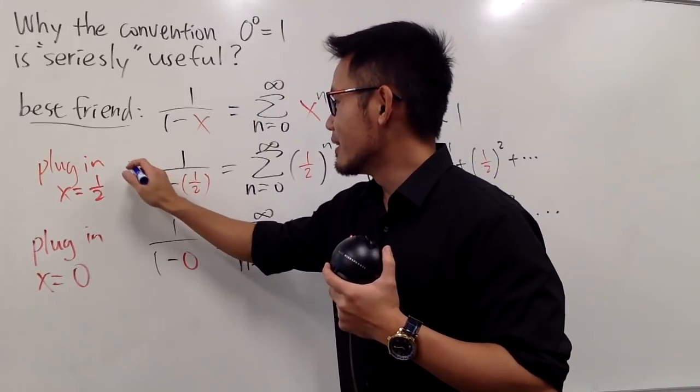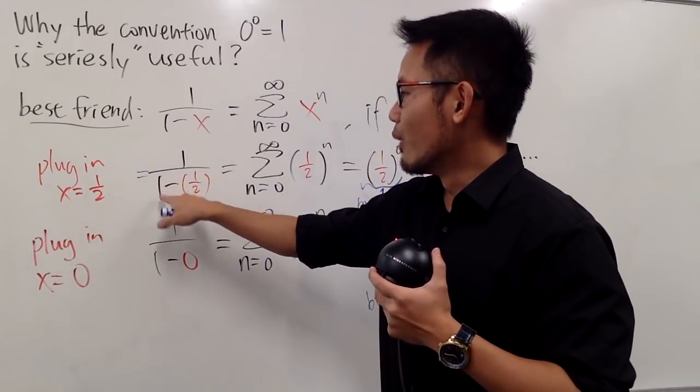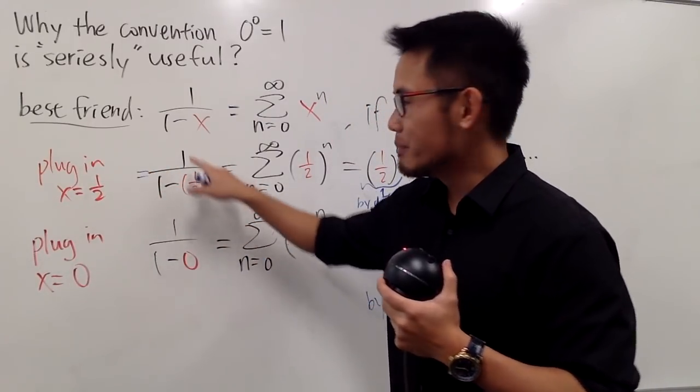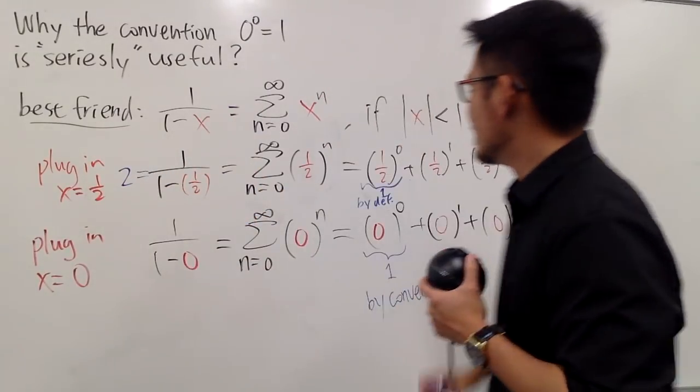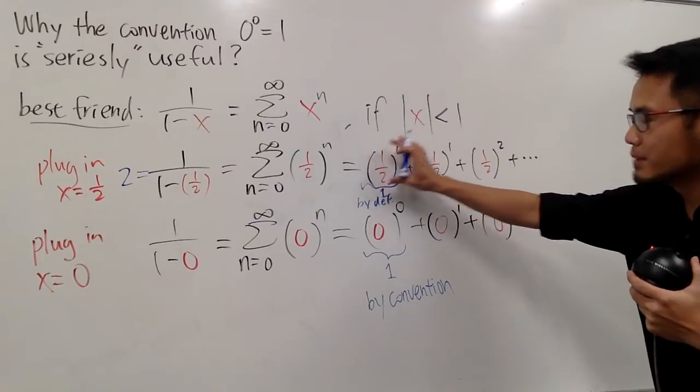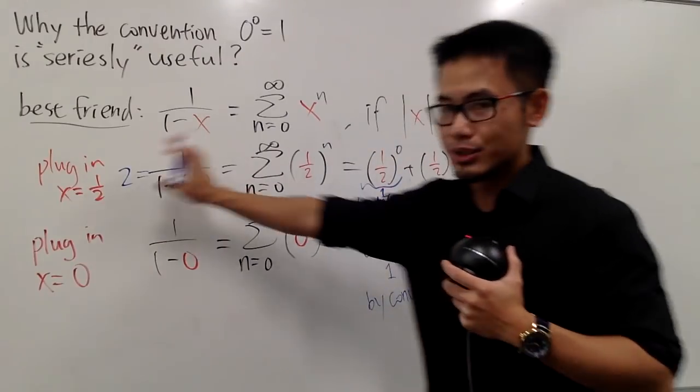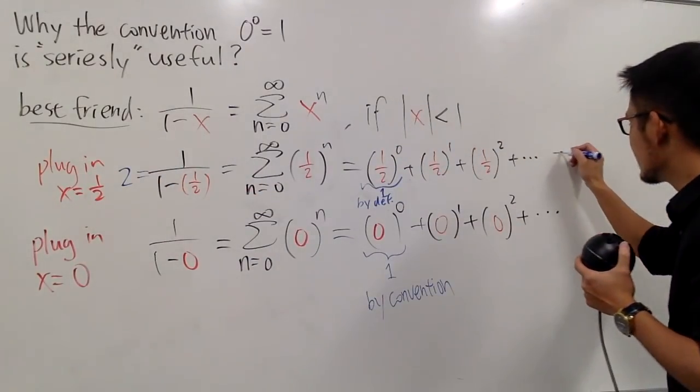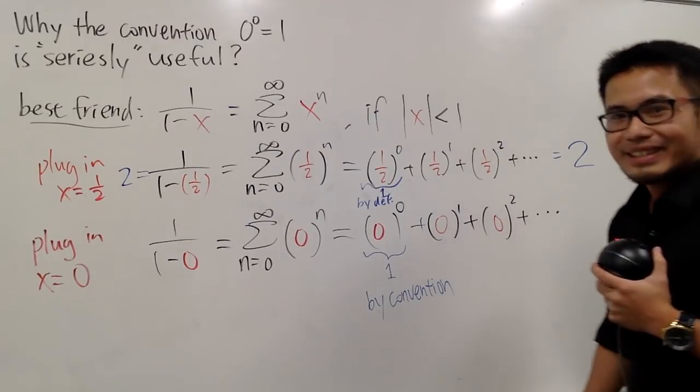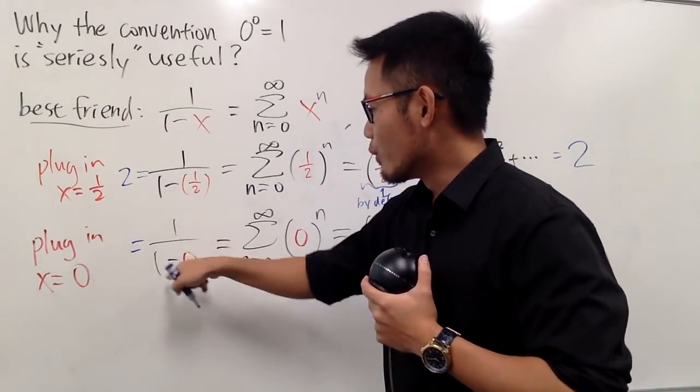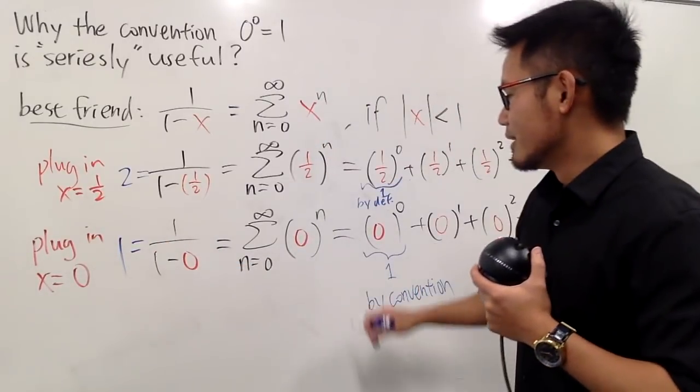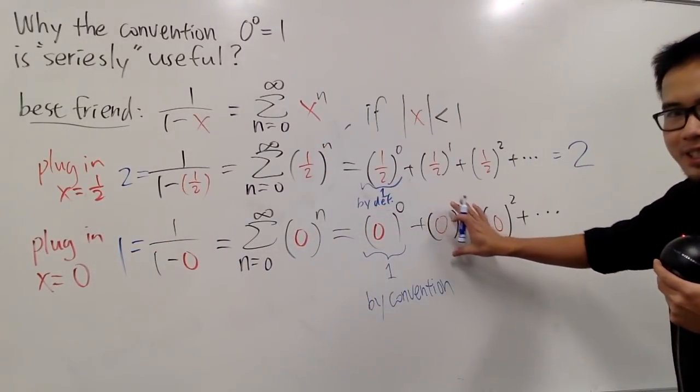I know, I know. The left-hand side, right here, is just 1 over 1 minus 1 half. Namely, 1 over 1 half. And you flip that, you get 2, okay? So, you get 1 plus the rest, it's 2. So, if you like, this is equal to 2. What's this? On the left-hand side, this is just 1 over 1 minus 0, which is 1.